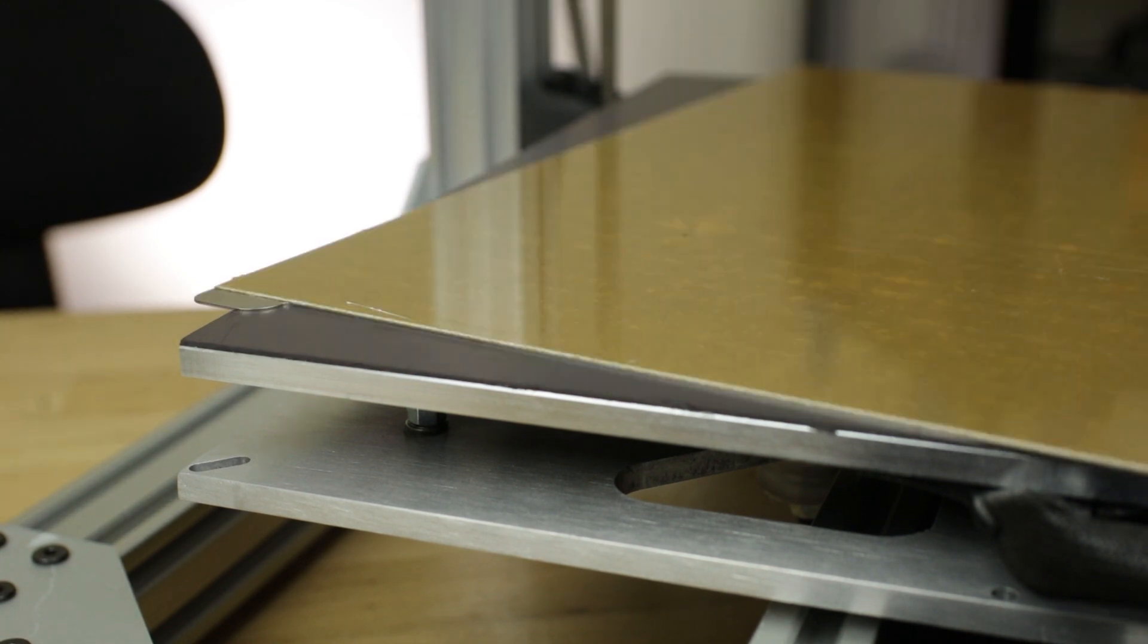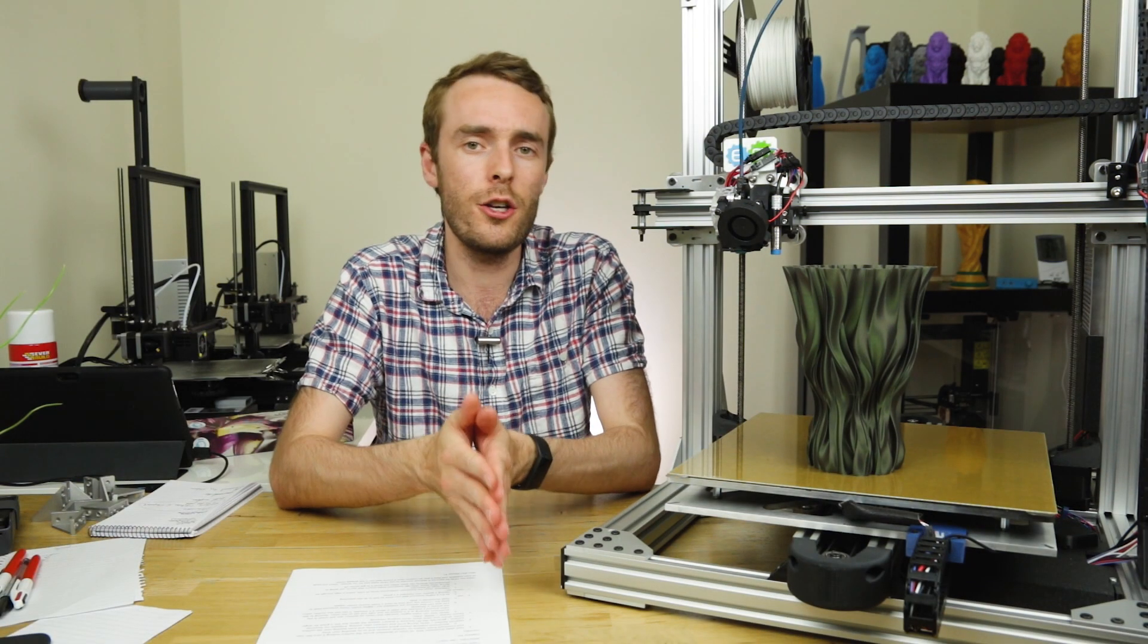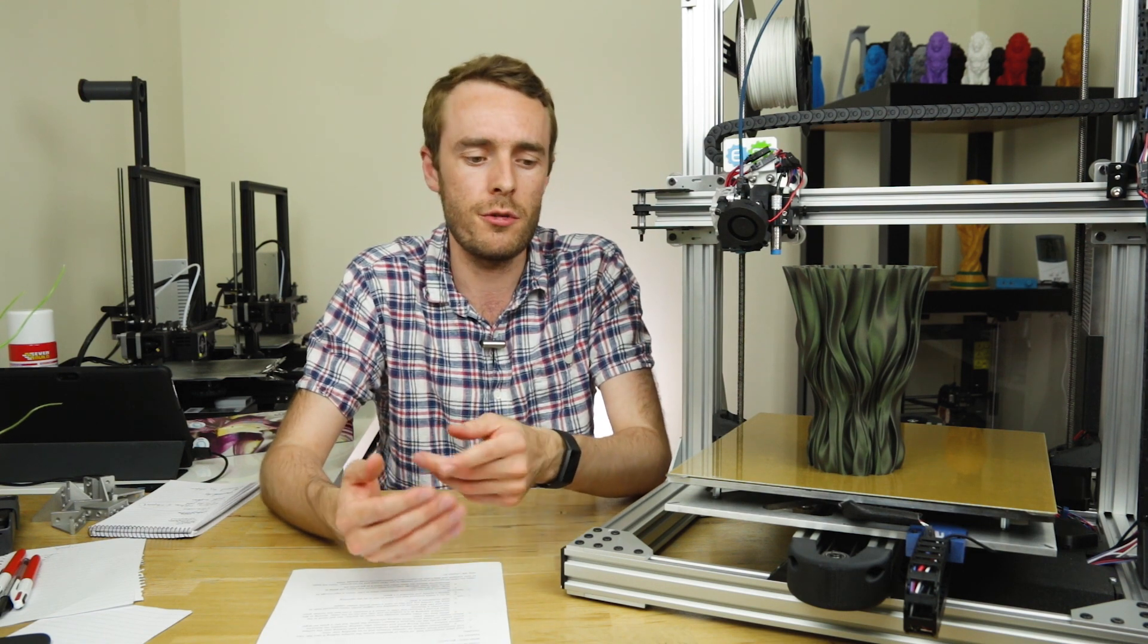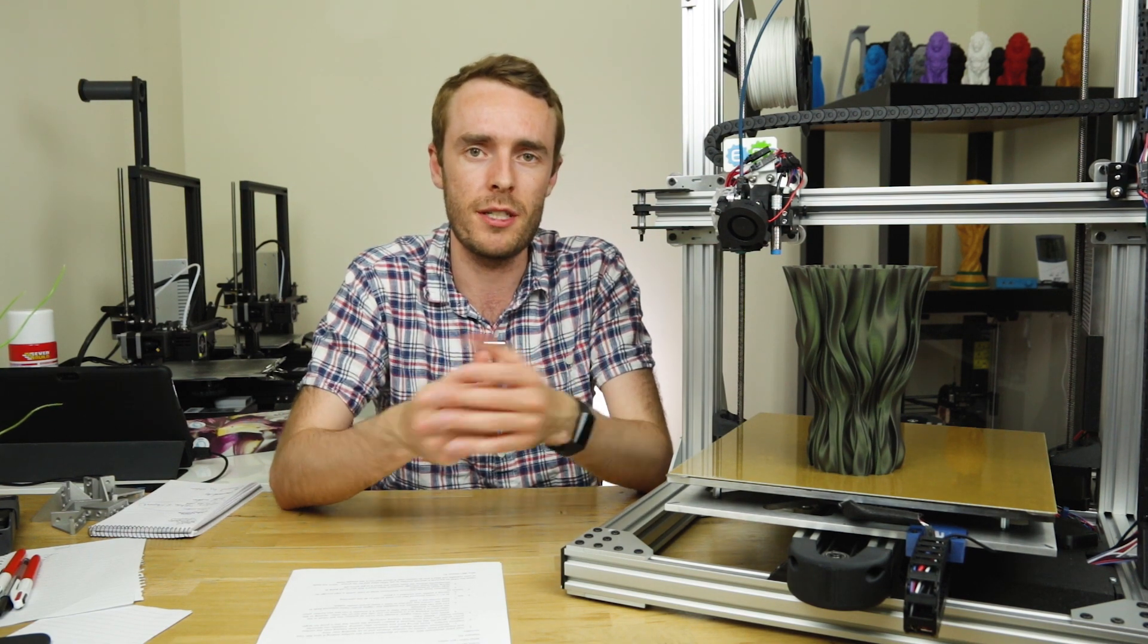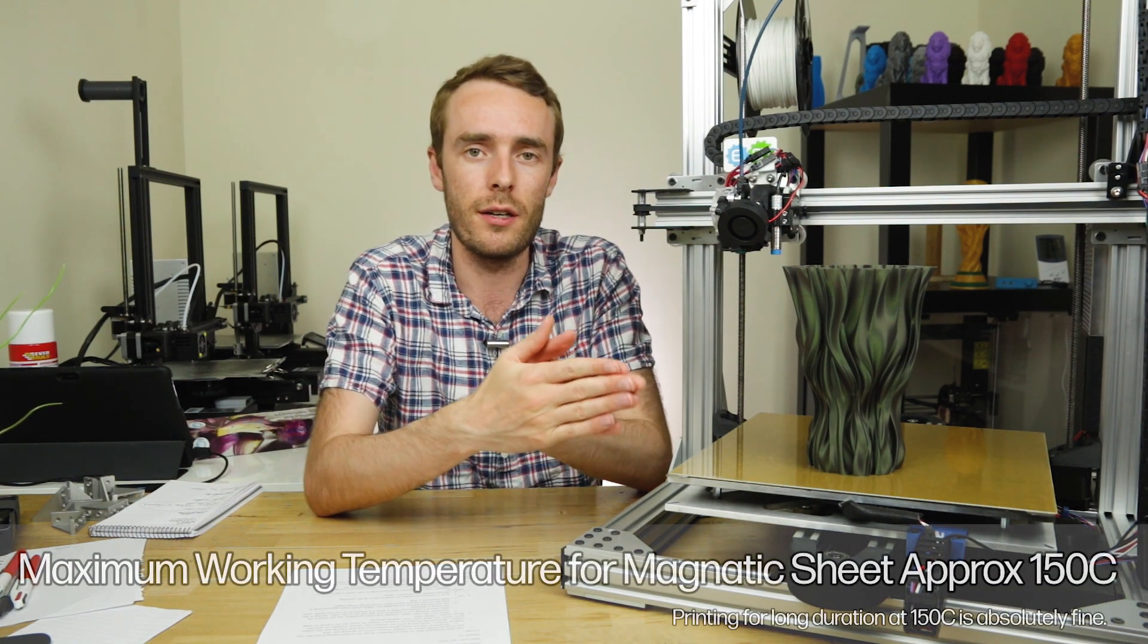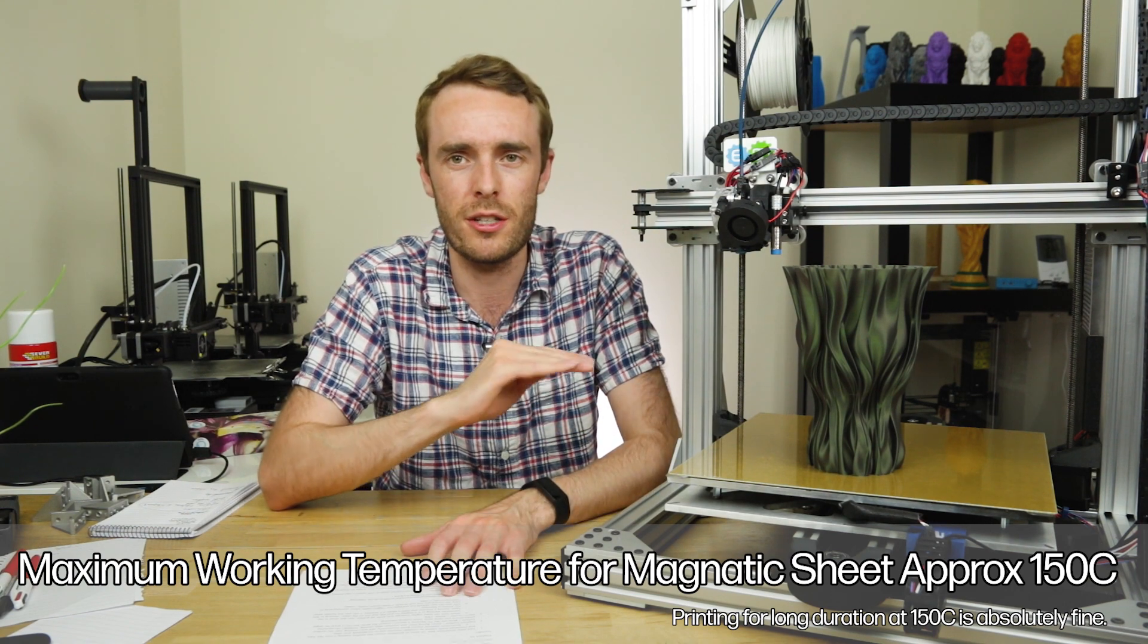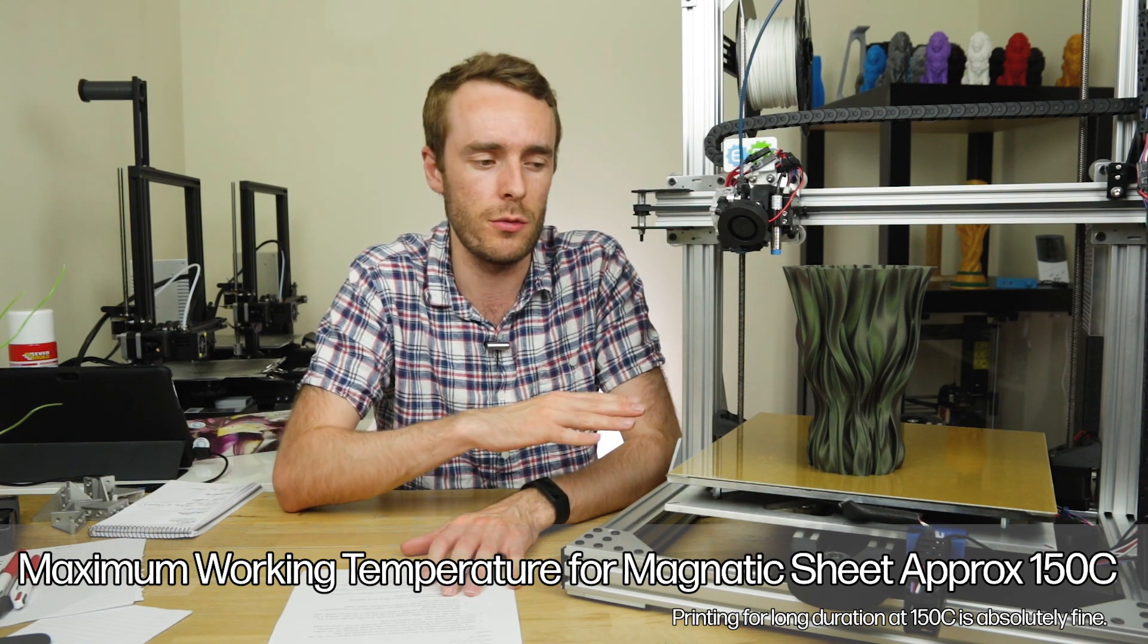The material itself being magnetic has these Curie temperatures and maximum working temperatures. The Curie temperature is the temperature at which the magnetic properties will be lost by that material, and the maximum working temperature is a consistent temperature that can keep without losing any of that magnetic property. So for this particular sheet, you can print pretty much any material that you're probably likely going to want to be printing.